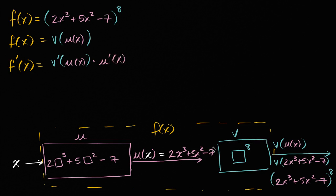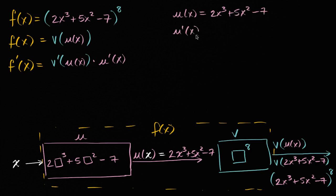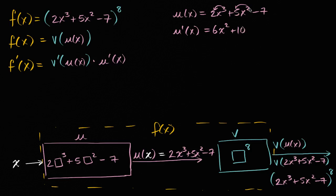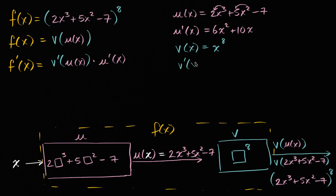So we know a few things already. We know that u of x is equal to two x to the third power plus five x squared minus seven. What is u prime of x? Using derivative properties and the power rule: three times two is six x squared, two times five is ten x, and the derivative of a constant is zero. So u prime of x is six x squared plus ten x. Now, v of x would be equal to x to the eighth power, so v prime of x is eight x to the seventh power.